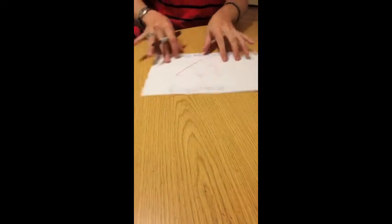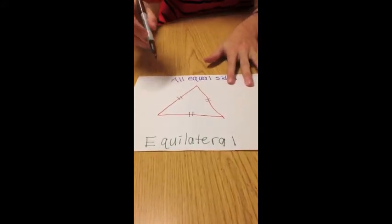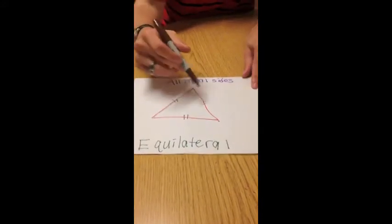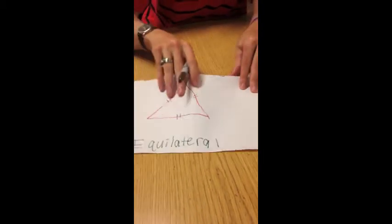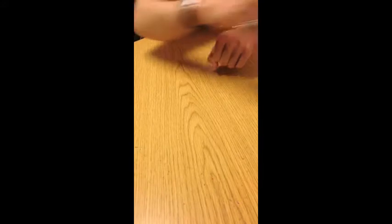The last triangle, and the easiest to identify, is the equilateral triangle. Because all three sides are equal. Now, that's it for the triangles.